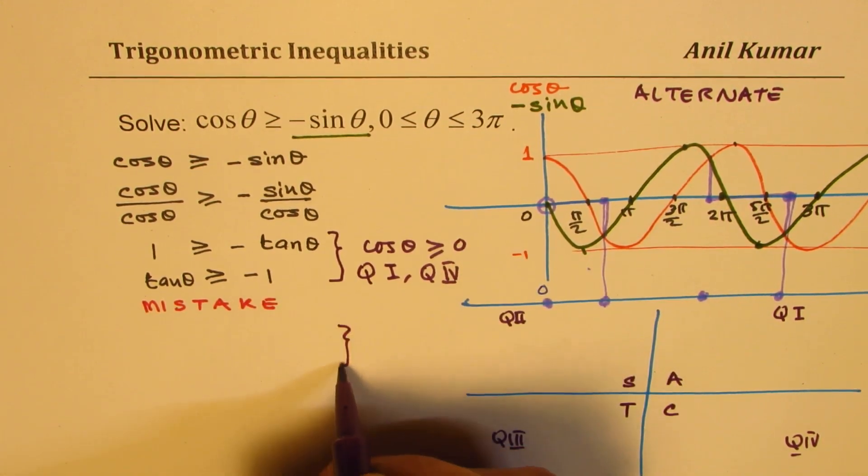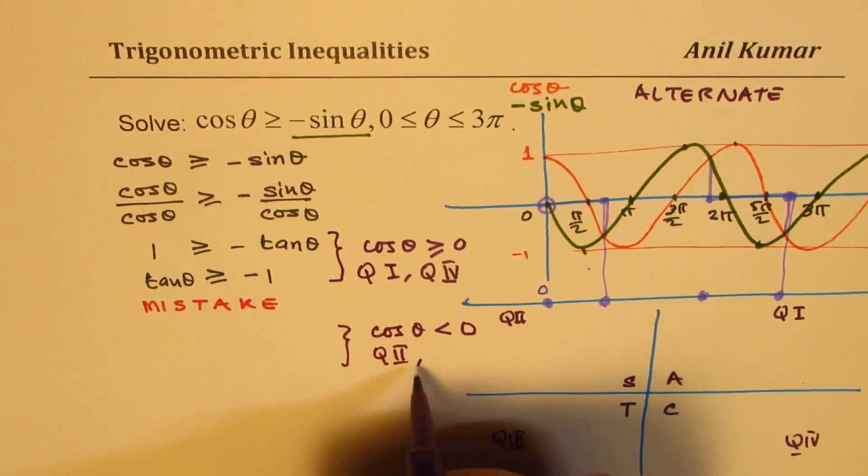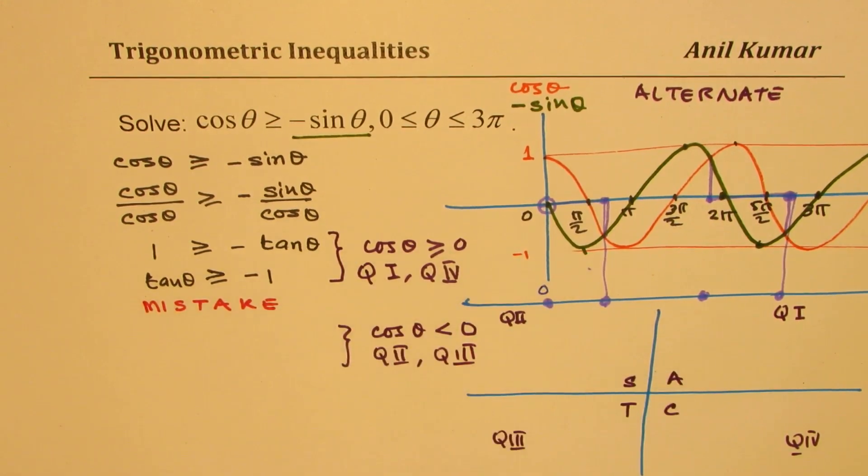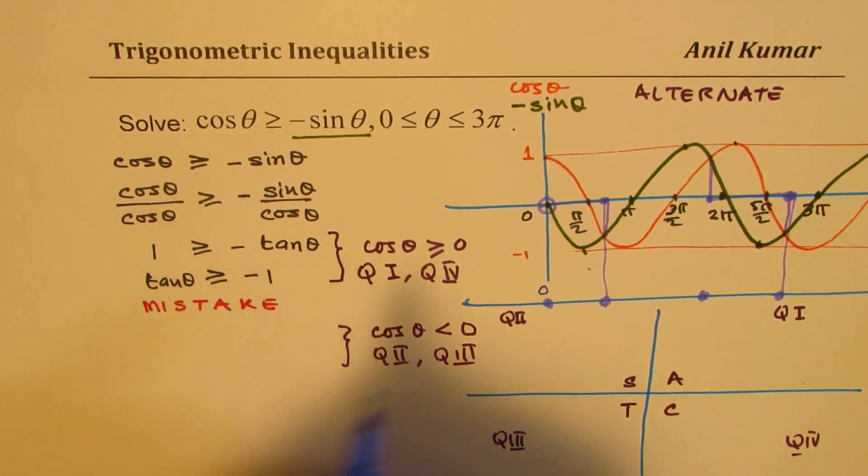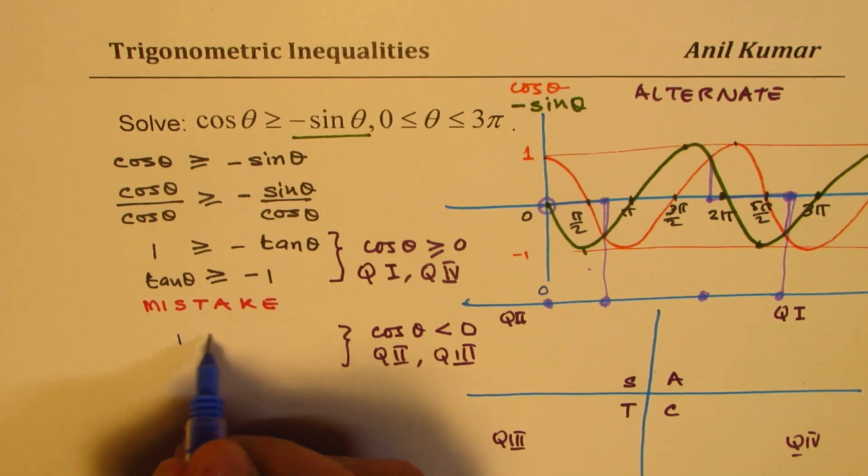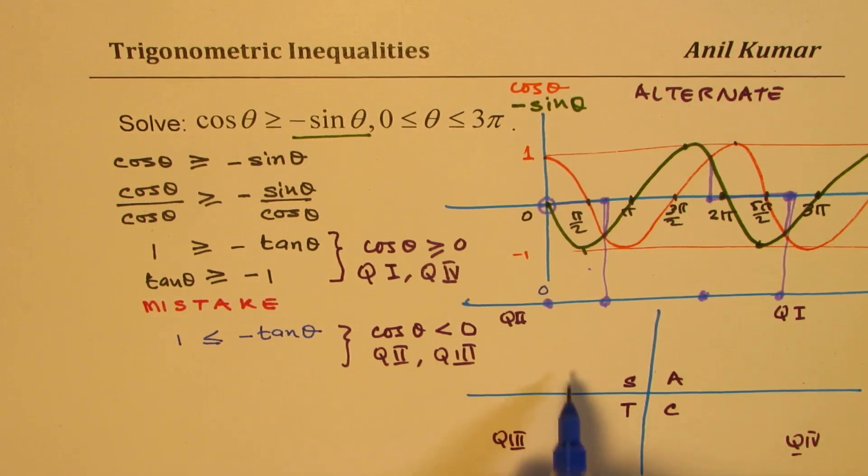This statement is only true when we are working in quadrant 1 or in quadrant 4. But if cos θ < 0, that means we are working in quadrant 2 and quadrant 3. In that case, you know you are dividing by a negative value, so this will reverse. Instead of getting 1 ≥, we will get 1 ≤ -tan θ. Because cos θ is a negative number. When you divide by a negative number, then the inequality sign will also change. This is key.